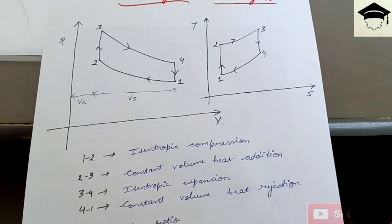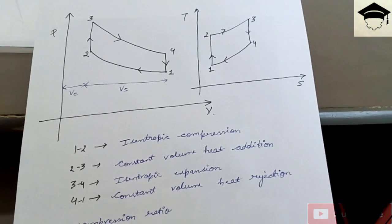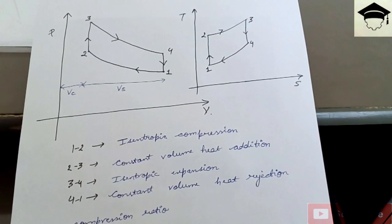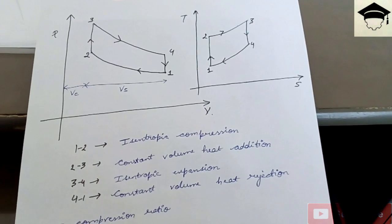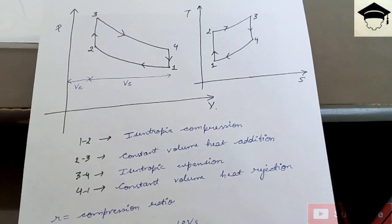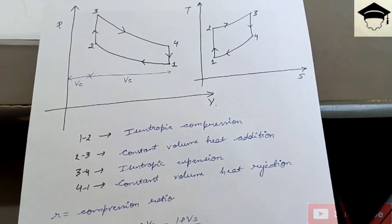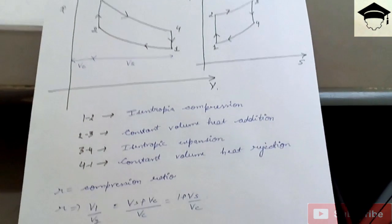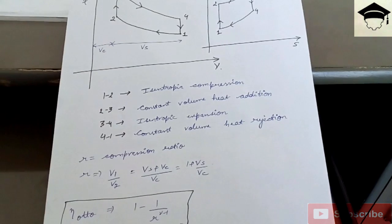Compression ratio is given by volume V1 upon V2, that is V1 by V2. So V1 is VS plus VC and V2 is VC. So compression ratio comes out to be 1 plus VS upon VC.